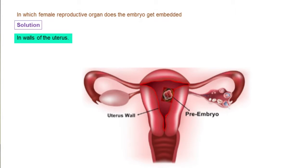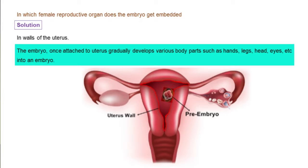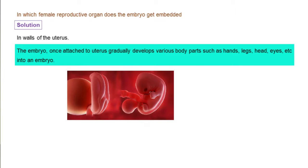And uterus is the female reproductive organ. So the embryo, once attached to the uterus, gradually develops various body parts such as hands,